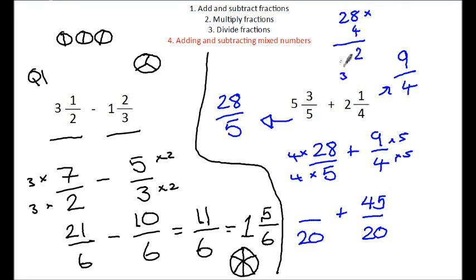112 plus 45. Use your column method. Don't do these in your head. It's not worth it. If you make a mistake you will lose a mark. So that's 157 over 20.